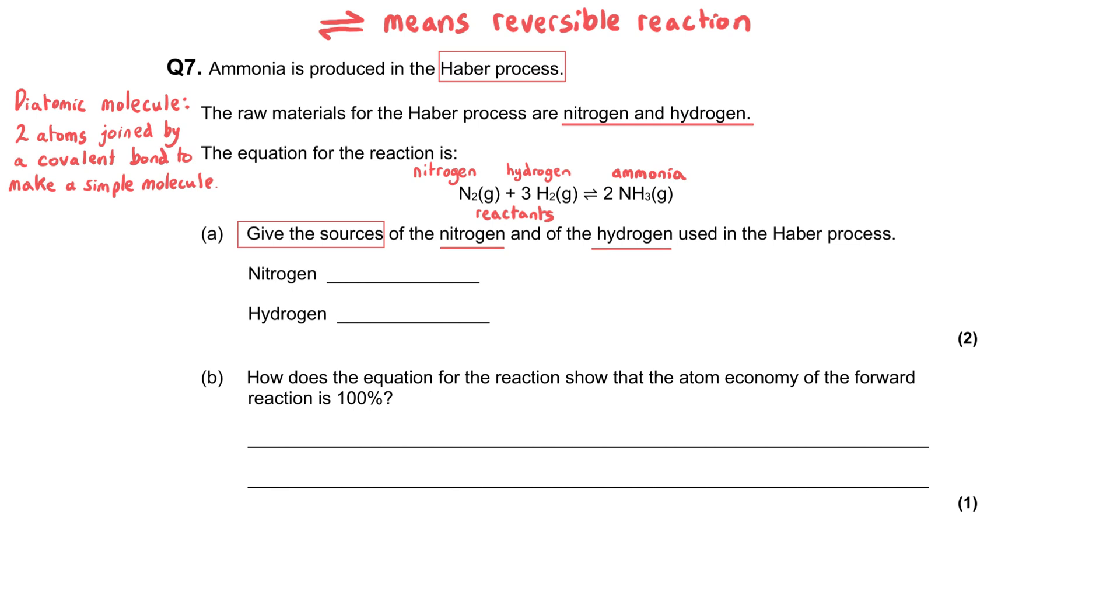The nitrogen comes from the air. Around about 78% of the air that we breathe is made of nitrogen, and so that nitrogen is extracted from the air by a process called liquefaction. So simply for the one mark here, we can just say air or the atmosphere.